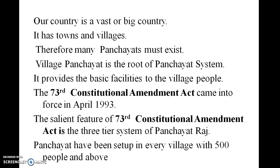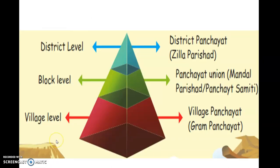The 73rd Constitutional Amendment Act came into force in April 1993. A salient feature of the 73rd Constitutional Amendment Act is the three-tier system of panchayat. Gram panchayats have been set up in every village with a population of 500 and above. This is the pyramid structure of panchayat levels: village level, block level, and district level.